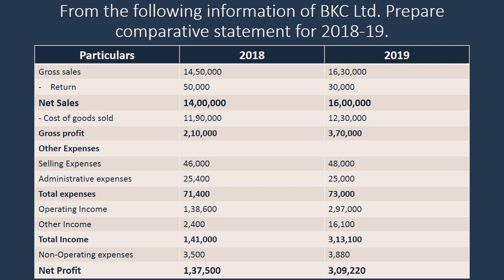By looking at the figures, we understand it is nothing but an income expenditure statement. We have gross sales, minus returns, net sales, minus cost of goods sold, gross profit, other expenses, total expenses, and total income going on till net profit. So by looking at the particulars itself we can make out that this is nothing but an income expenditure statement of BKC Limited.